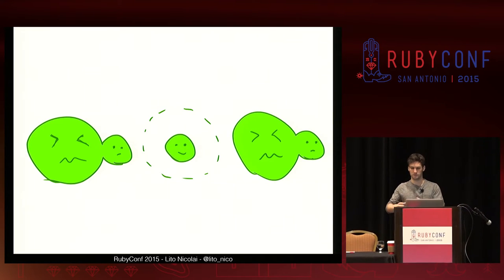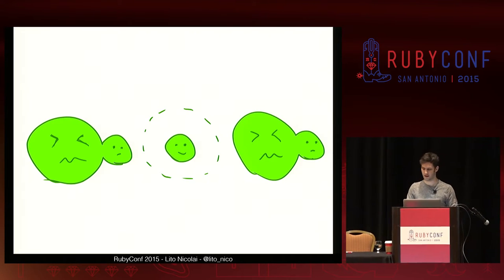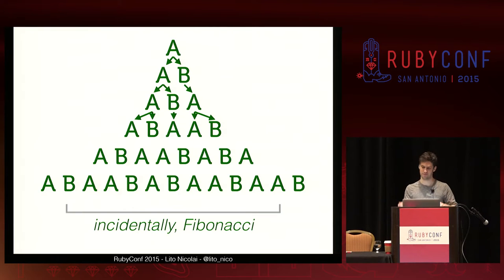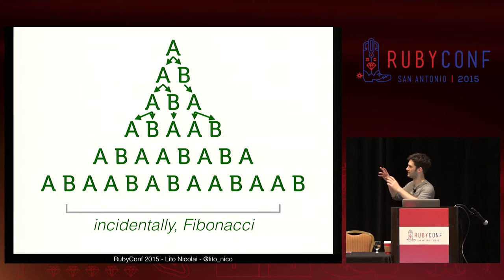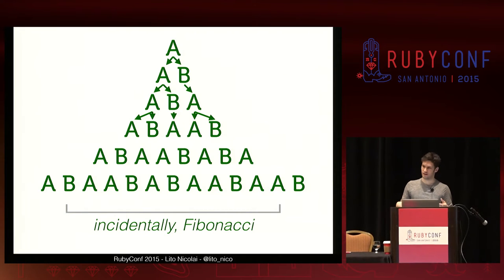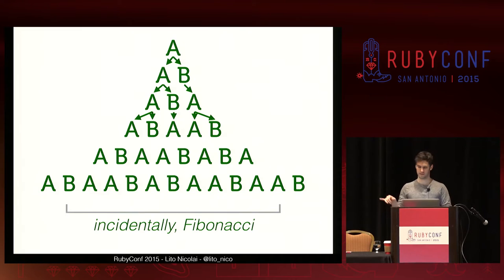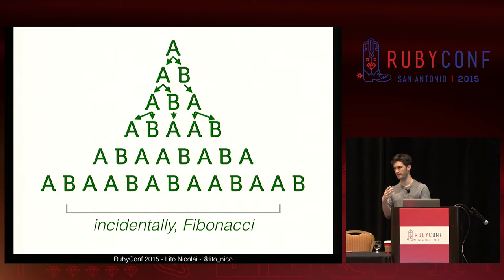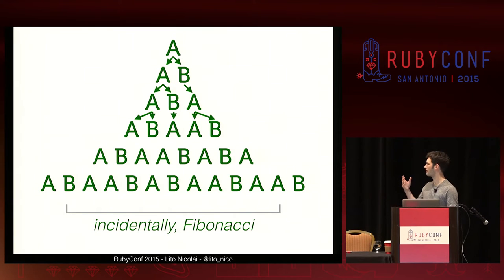Each alga will split and each baby will grow up. I'm just going to start representing these things with letters. Alga, alga, baby, alga, baby, alga — it keeps going. Incidentally, this forms the Fibonacci sequence with the length of each generation, for the same reason breeding rabbits does. You have that same exponentiation effect.